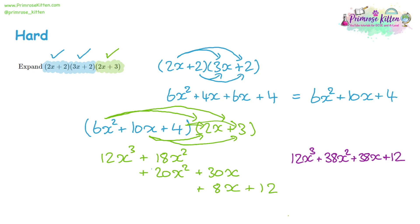When you're expanding three sets of brackets, expand two sets first to get an answer, then multiply that by the third one. So we're essentially expanding double brackets twice in order to expand three brackets.